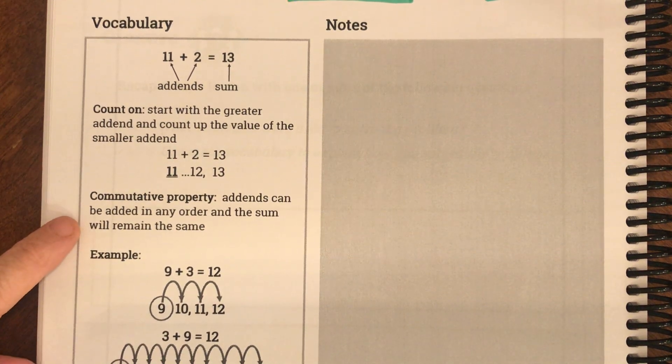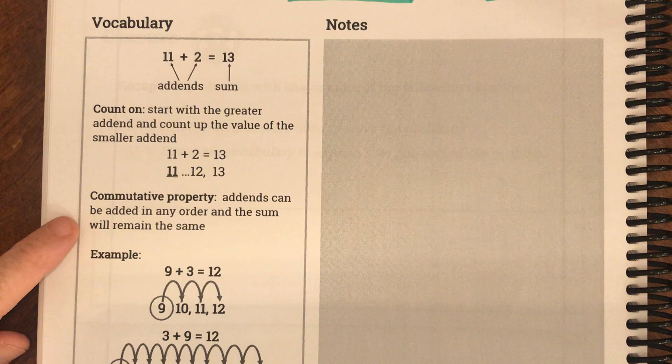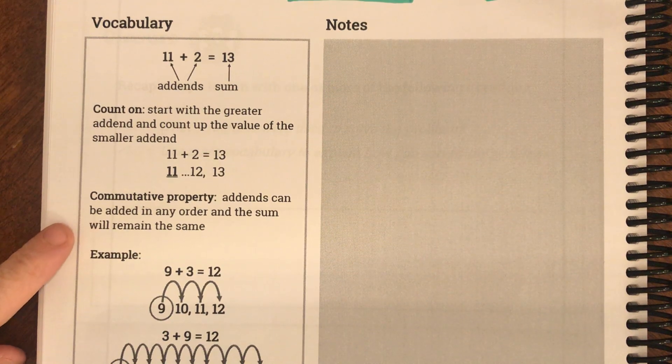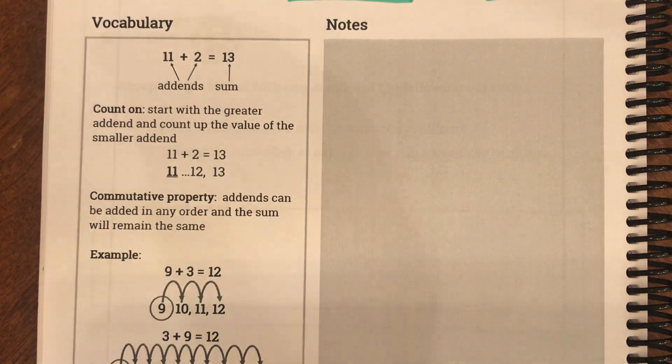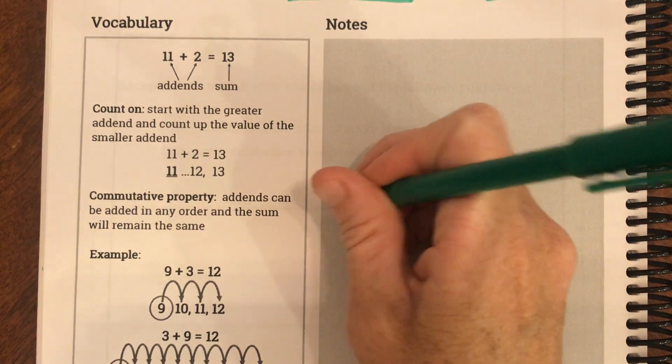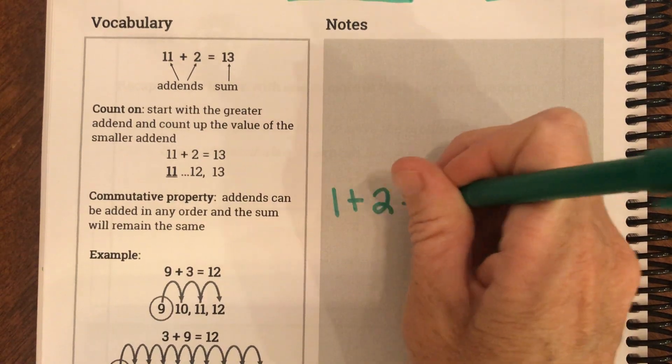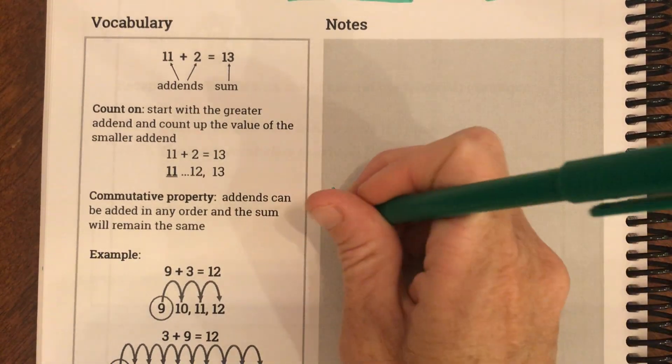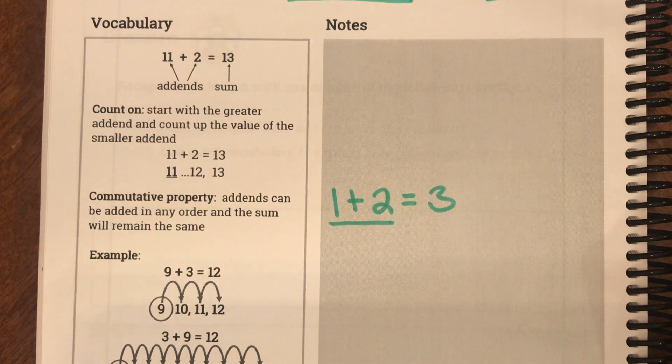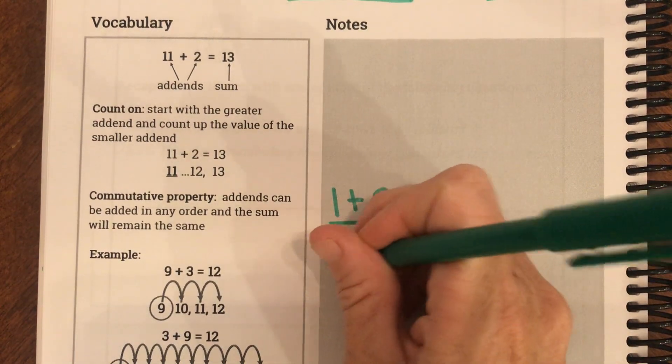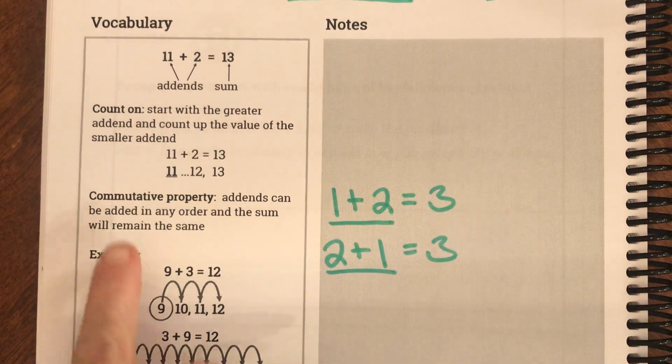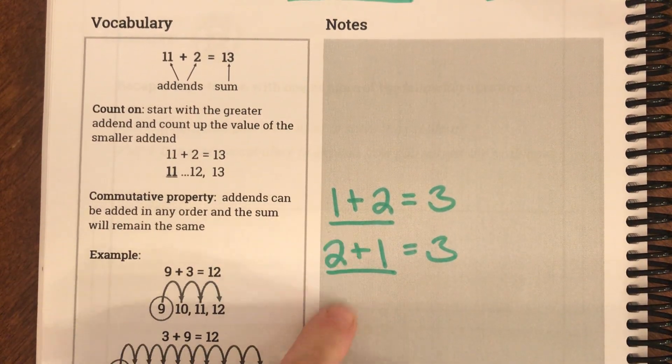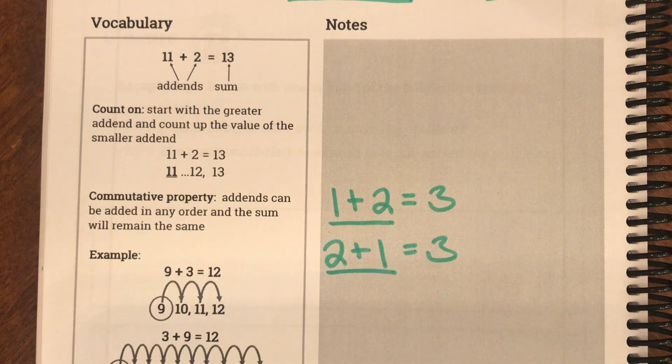We've already talked about this property called the commutative property. And remember it says addends can be added in any order and the sum will remain the same. So our example in the last two lessons was we said 1 plus 2 equals 3. But we can switch the order of our addends and we can say 2 plus 1 also equals 3.